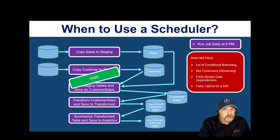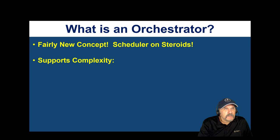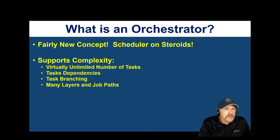Sometimes a job scheduler isn't enough, and that's when an orchestrator comes in. Orchestrators are a relatively new concept — something like Airflow looks kind of like a scheduler but with lots of fancy features. It's really a scheduler on steroids: it supports a virtually unlimited number of tasks, task dependencies, and task branching with many layers and potential paths you can go down.